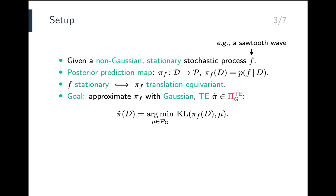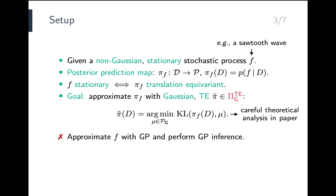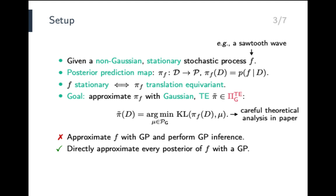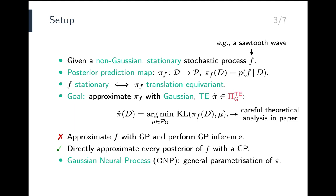In the paper, we provide a careful theoretical analysis of this objective — for example, examining the existence and uniqueness of the minimizers. Importantly, what this approximation is not doing is approximating the prior F with a Gaussian process and then performing Gaussian process inference. Instead, the approximation directly approximates every posterior with a Gaussian process, which is much more flexible. The Gaussian neural process, or GNP in short, is a general parametrization of this approximation, which follows from a universal representation theorem proved in the paper.